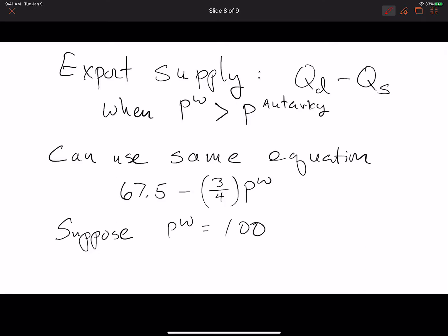What about export supply? That's going to be a situation where the amount of domestic quantity demanded is going to be less than the supply. That is, the quantity supplied minus the quantity demanded is greater than zero. We can use the same equation, because that equation that we derived earlier is really the difference between the quantity demanded and the quantity supplied.